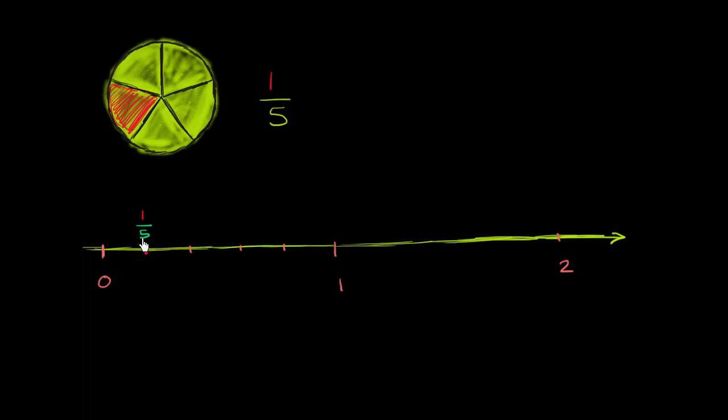Now, you might say, OK, well, that's fair about 1 fifth. But what about all these other slashes? What numbers would we call that? Well, we can make the exact same idea. If up here, instead of shading in one out of the five equal sections, if I shaded in two of the five equal sections, then I wouldn't say this is 1 fifth anymore, I would say that this is 2 fifths. And so if I go two of the equal sections towards 1, then I should call this number right over here, I should call this 2 fifths.